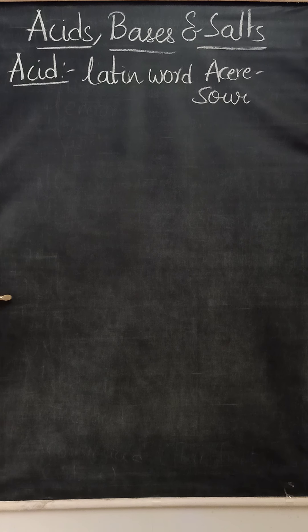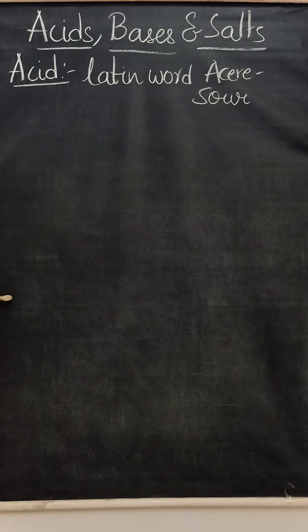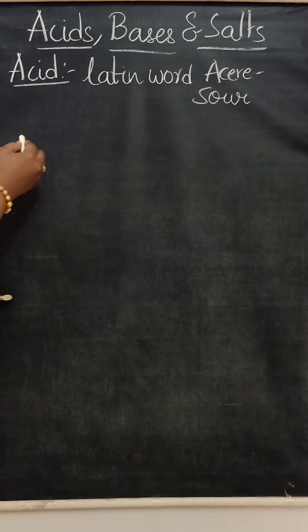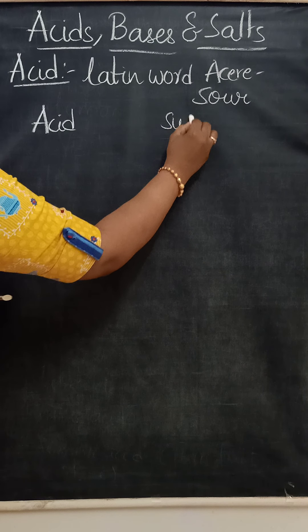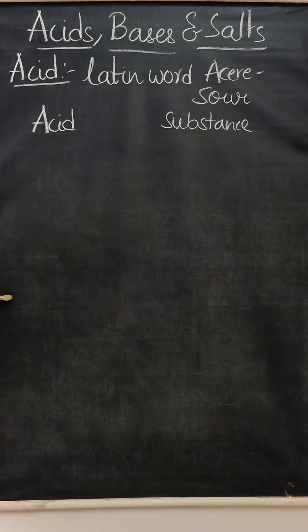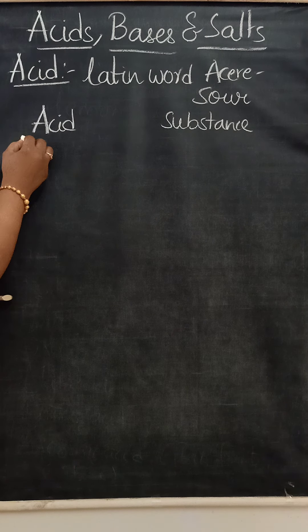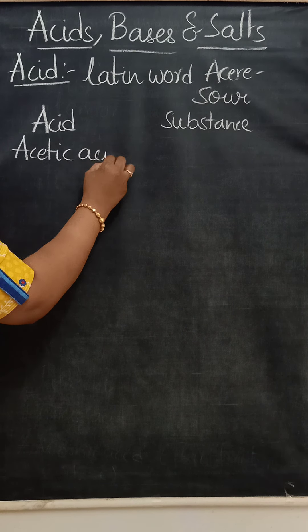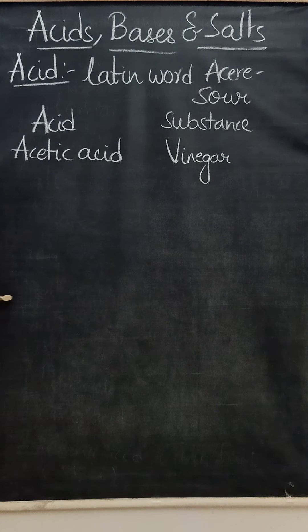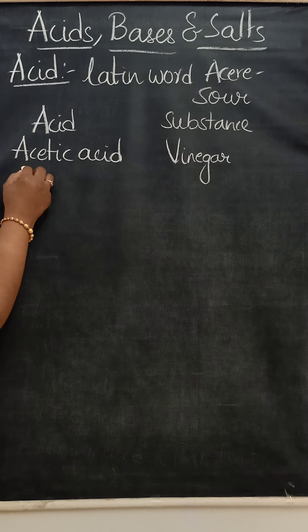What are the different types of acids present in common food substances? The first one is vinegar - acetic acid is present in vinegar. If we consider citrus fruits like lemon and oranges, citric acid is present in them.